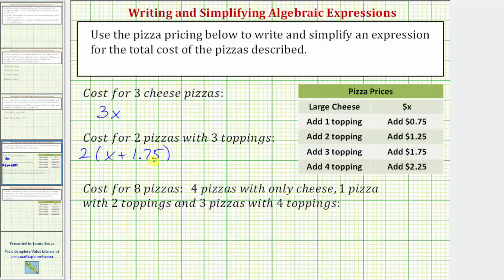And now, to simplify the expression, we distribute the two. We would have two times x plus two times 1.75. Two times x equals 2x, and two times 1.75 is 3.50, or just 3.5. The expression 2x plus 3.5 represents the cost of two pizzas with three toppings.